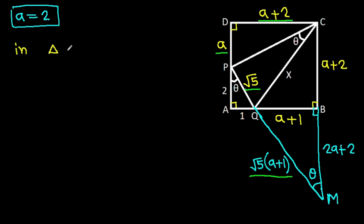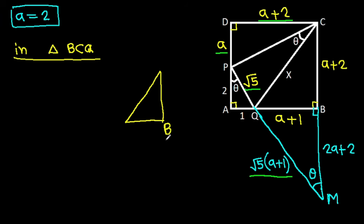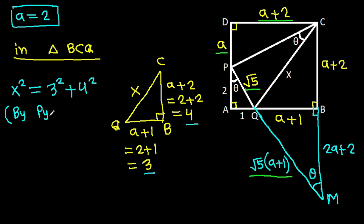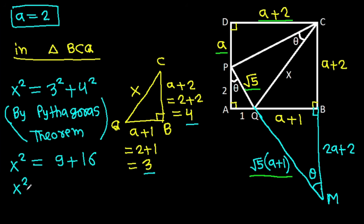Now we have A equals 2. In triangle BCQ, this angle is 90 degrees. BQ is A plus 1, that is 2 plus 1 equals 3. BC is A plus 2, that is 2 plus 2 equals 4. And CQ is x. So x squared equals 3 squared plus 4 squared, by the Pythagorean theorem. x squared equals 9 plus 16 equals 25, so x equals 5.